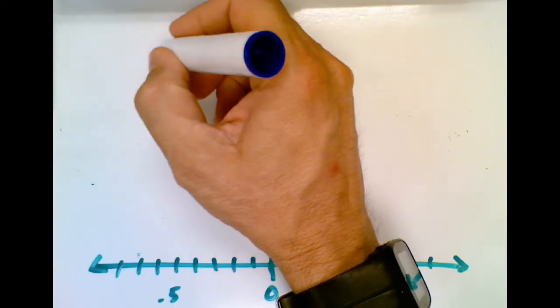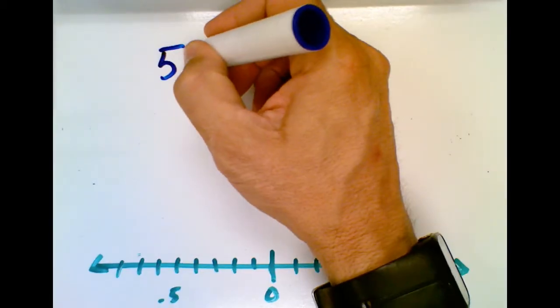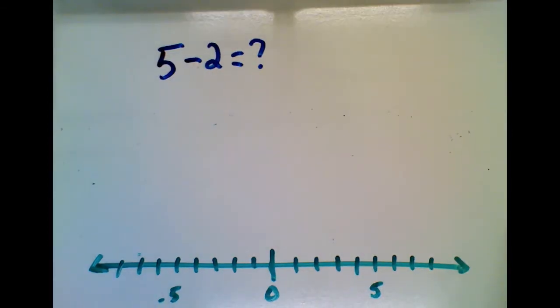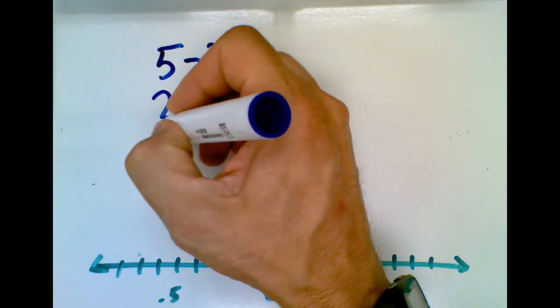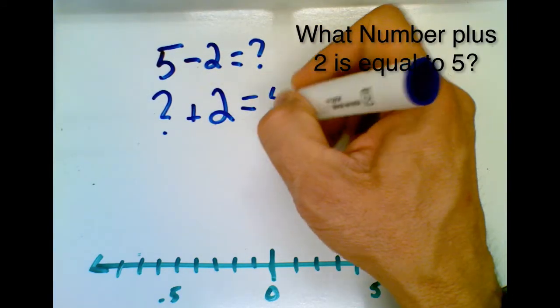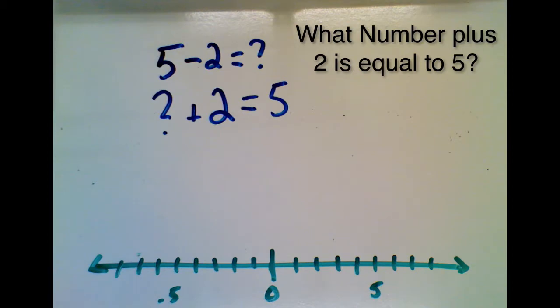So if we look at the question, what is 5 subtract 2 equal to? The way that we're going to do this is by rewriting this as an addition question. So instead asking what number plus 2 is equal to 5 and representing that on the number line.